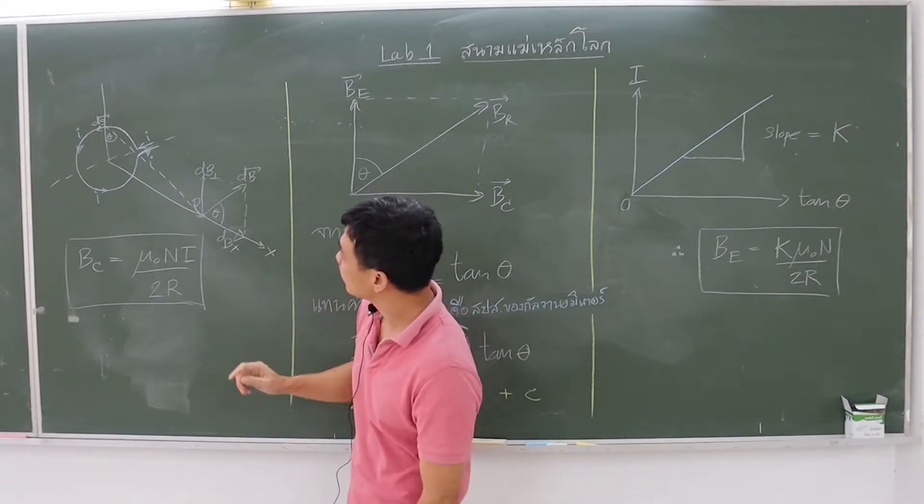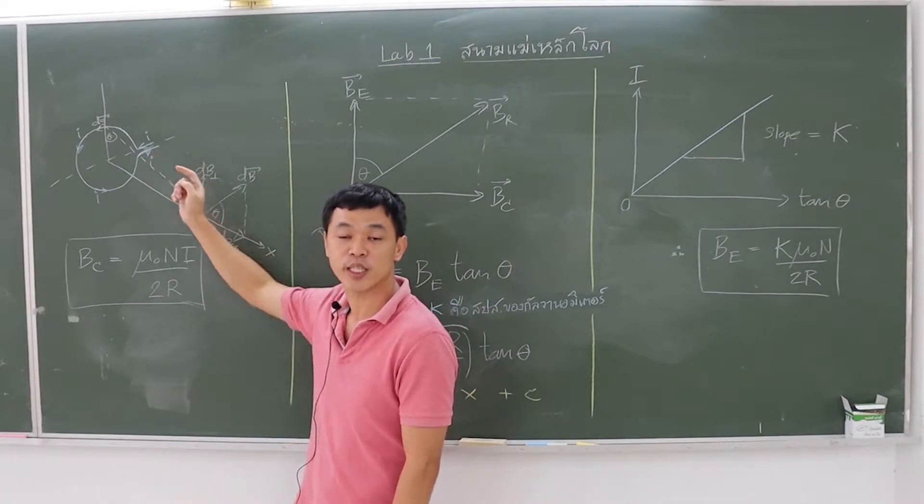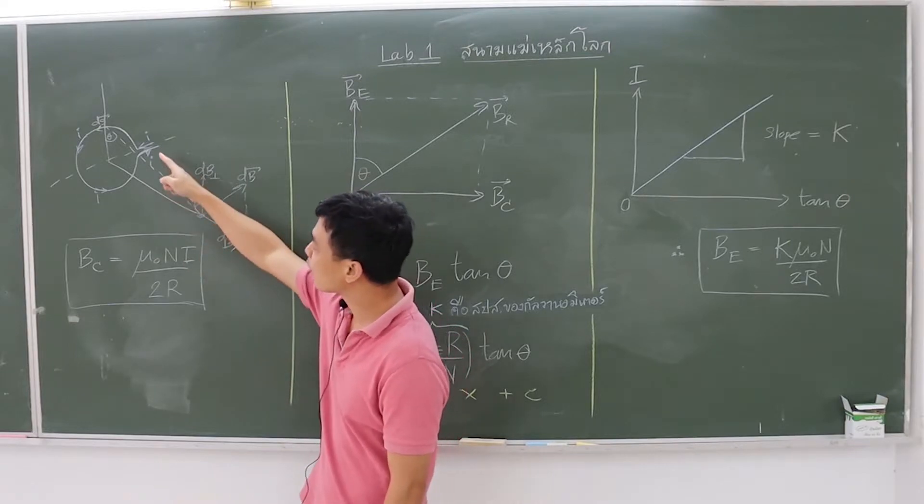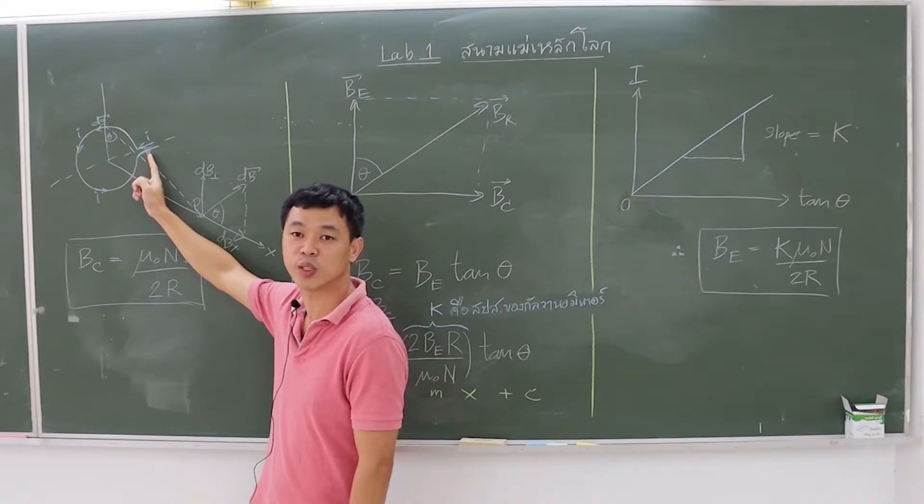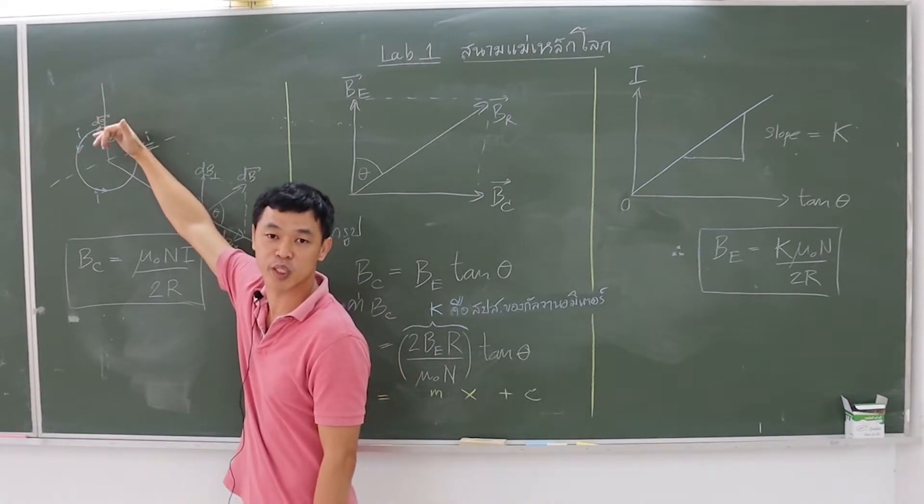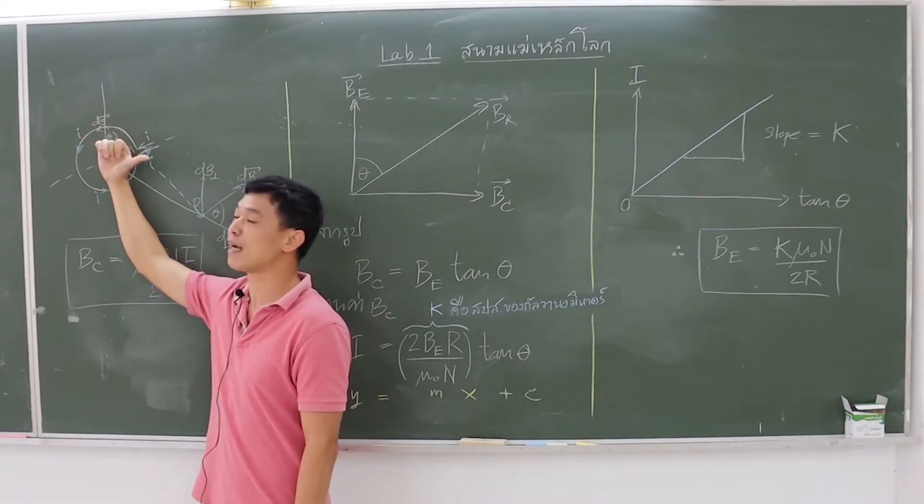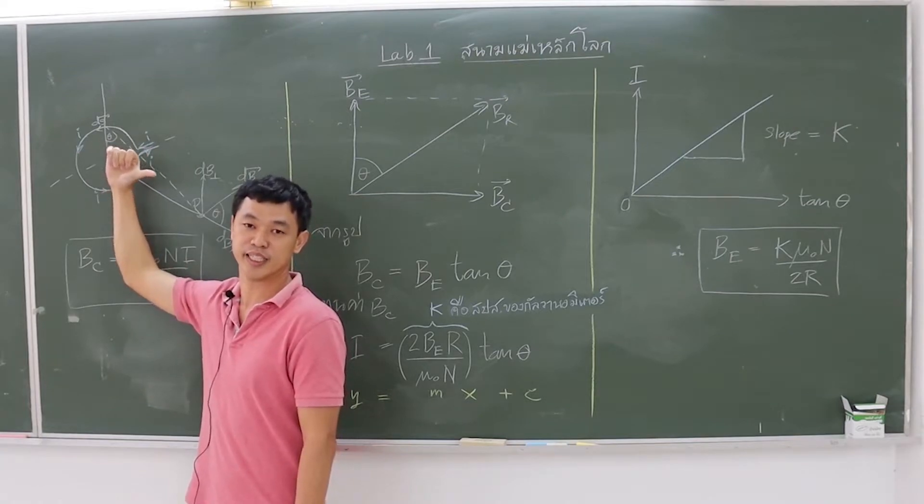Theoretically we can find the direction of the magnetic field using the right-hand rule. The four fingers represent the direction of the current in the counter-clockwise direction. The thumb direction is the direction of the magnetic field directed outwards.